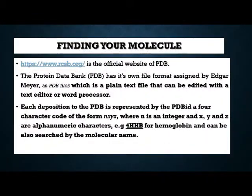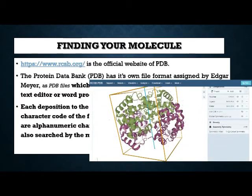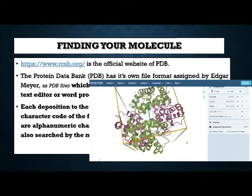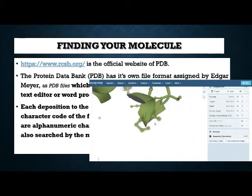For finding your molecule on the RCSB website, you can go to www.rcsb.org, where you can find your molecule by searching in the search bar using its PDB ID. The protein data bank has its own file format assigned by Edgar Muir, known as PDB files, which is a plain text file easily edited with text editors and readable. Each entry is assigned a four-character PDB ID code. For example, 4HHB is used for the hemoglobin molecular structure.